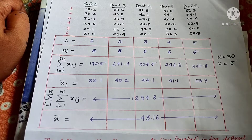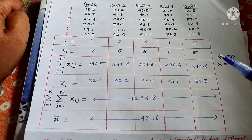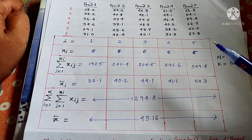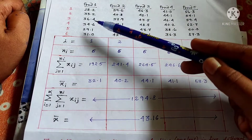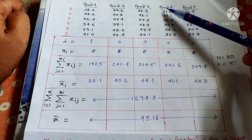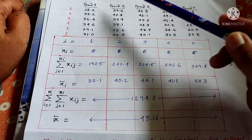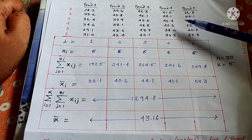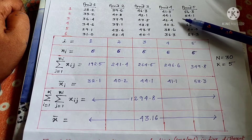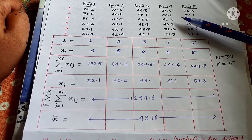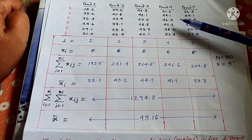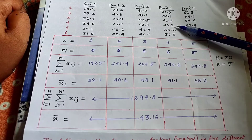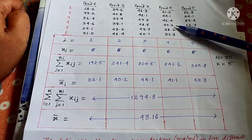In my previous video I discussed how to perform one-way ANOVA when they ask you to justify if there is any significant difference in the mean value of a certain parameter. In this problem, they have given you a data table where five groups are there: Pond 1, Pond 2, Pond 3, Pond 4, and Pond 5. They ask you to justify if there is any significant effect of these ponds on the mean strontium level, for which you need to do the one-way ANOVA test.